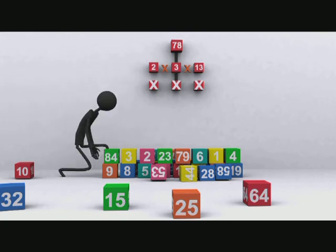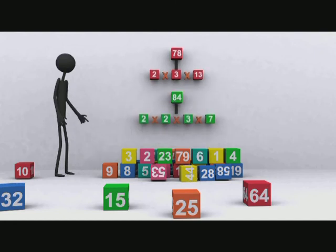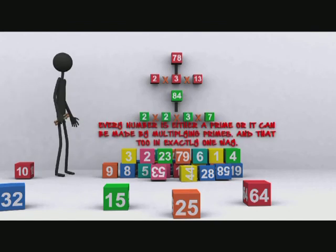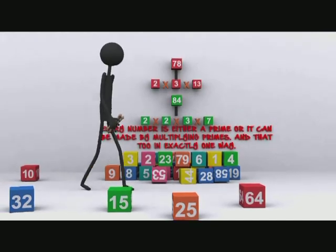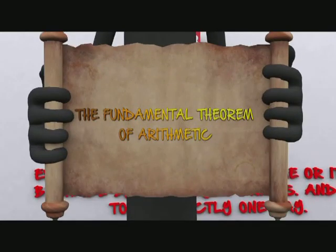Let's try another number, 84. 2 into 2 into 3 into 7. Again, a unique factorization of primes. So what we've figured out is that every number is either a prime, or it can be made by a unique product of primes. This idea is called the fundamental theorem of arithmetic.